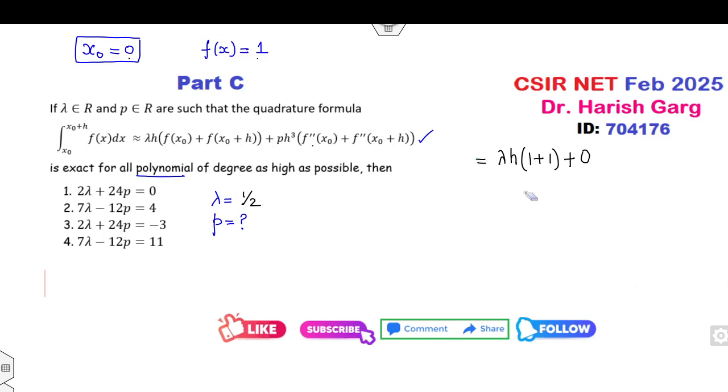Now for the second case I can choose the second basis. Second basis is my x, but if you choose the value of x then the second derivative will be 0. Second derivative is my 2. Then the left hand side will be 0 to h of x² and right hand side will be λ is my 1/2 h f(0), because x₀ is my 0, f(0) is 0 plus h² plus p h³. What is the second derivative of x²? It is 2 plus 2.